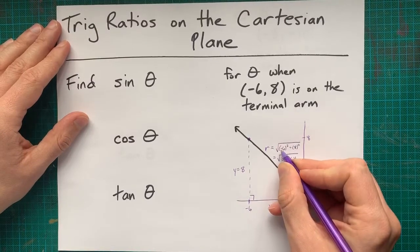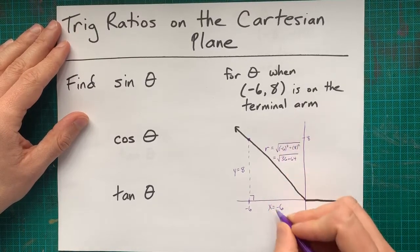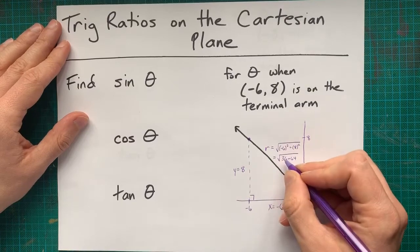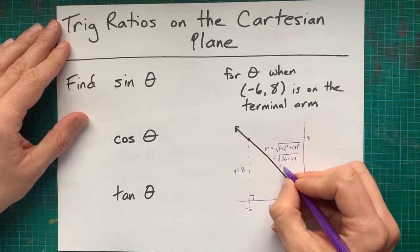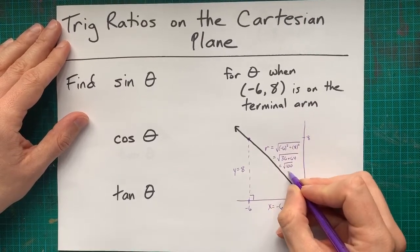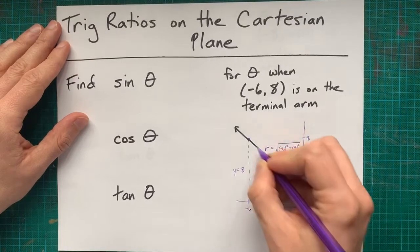This gives me the square root of 36 plus 64. Just watch out. The negative value of x squared gives you a positive.